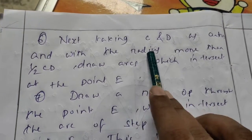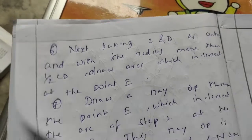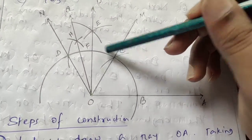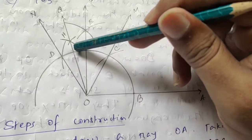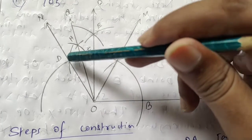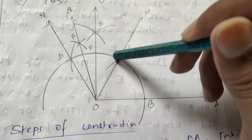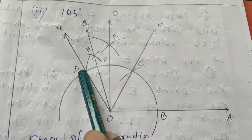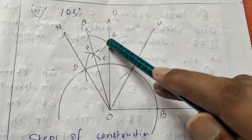Step six: taking C and D as centers, with radius more than half of CD, draw arcs that intersect at point E. Take point C as center with radius more than half of CD and draw an arc. Then take point D as center with the same radius and draw another arc. Those two arcs intersect at point E.